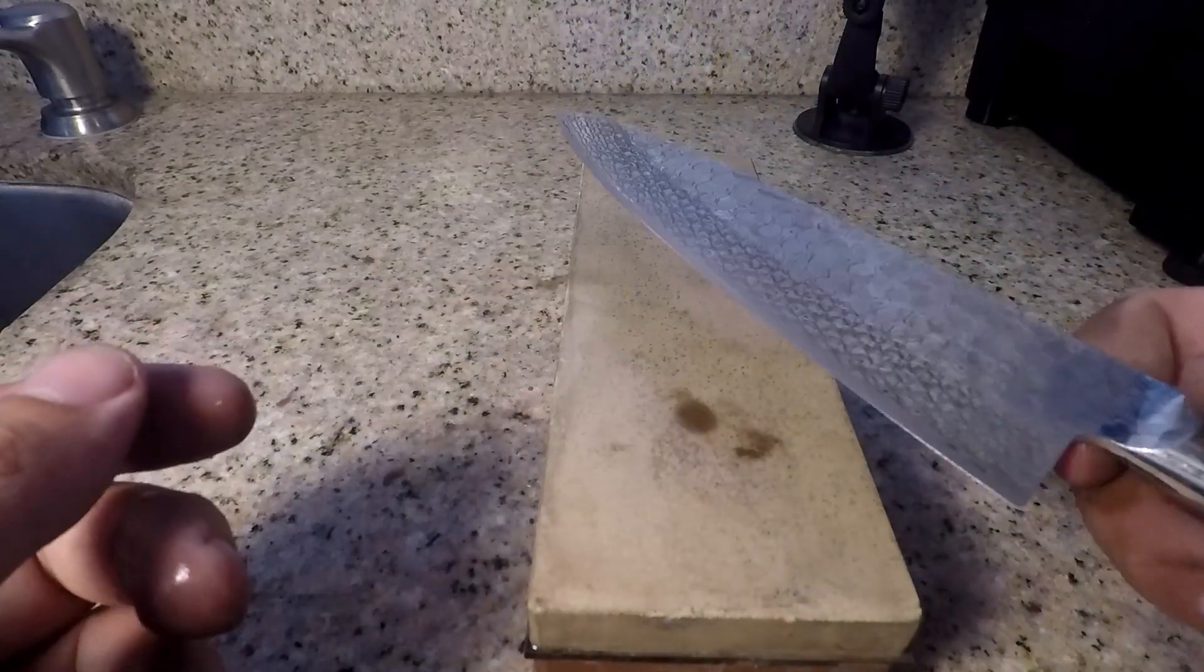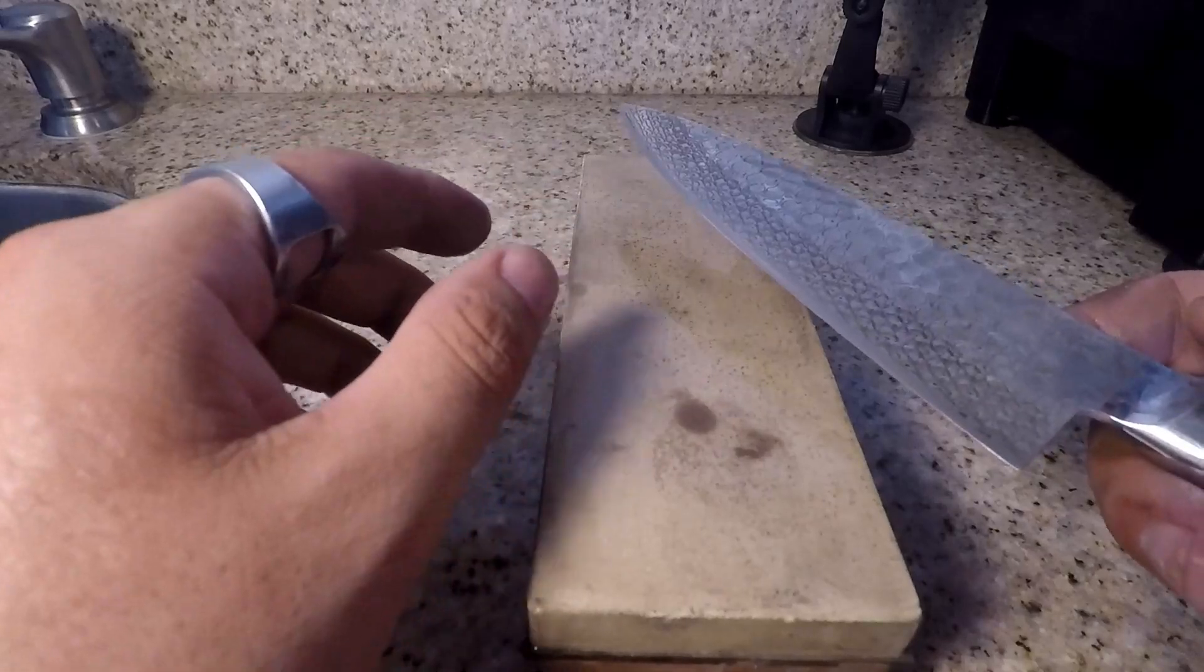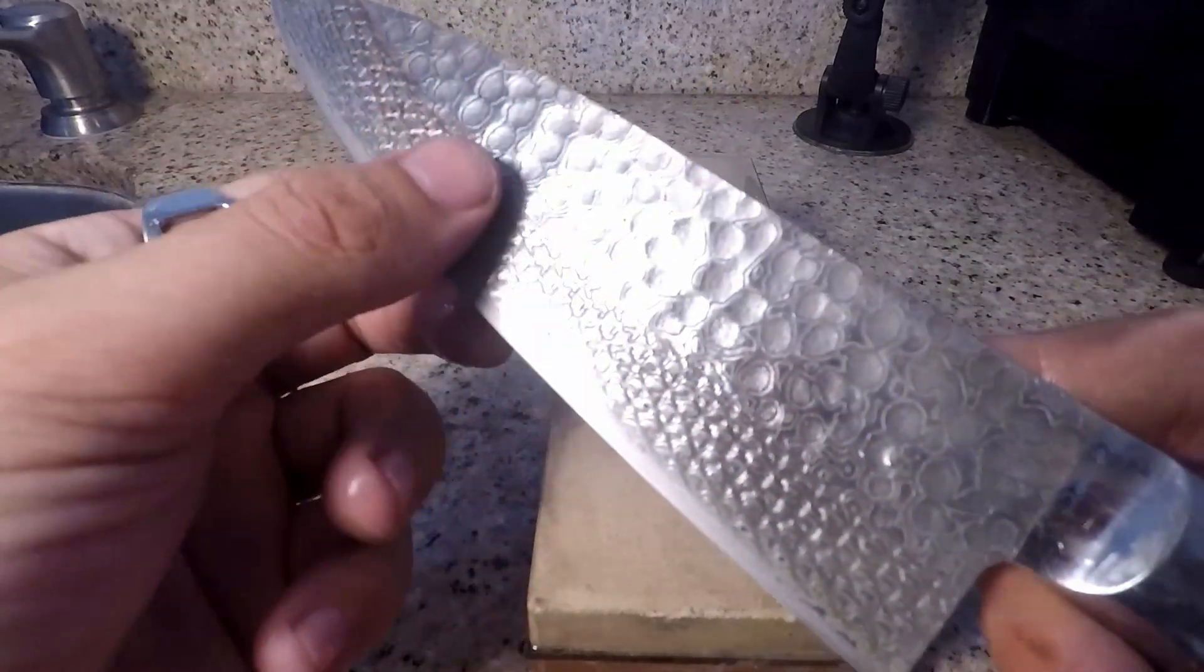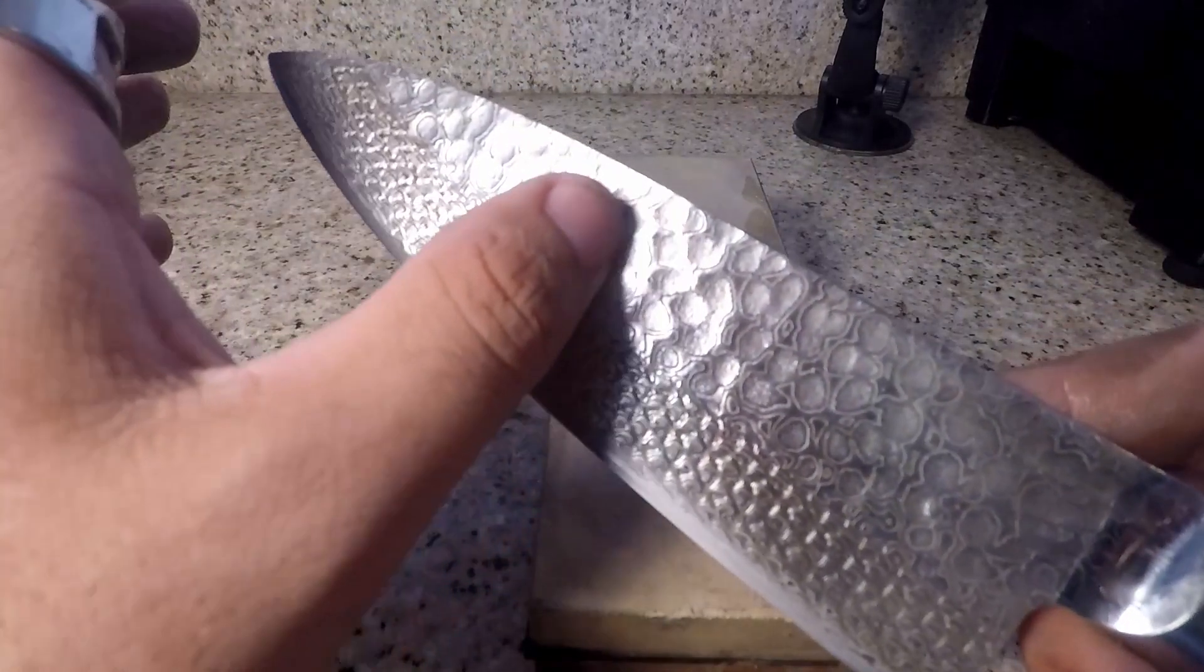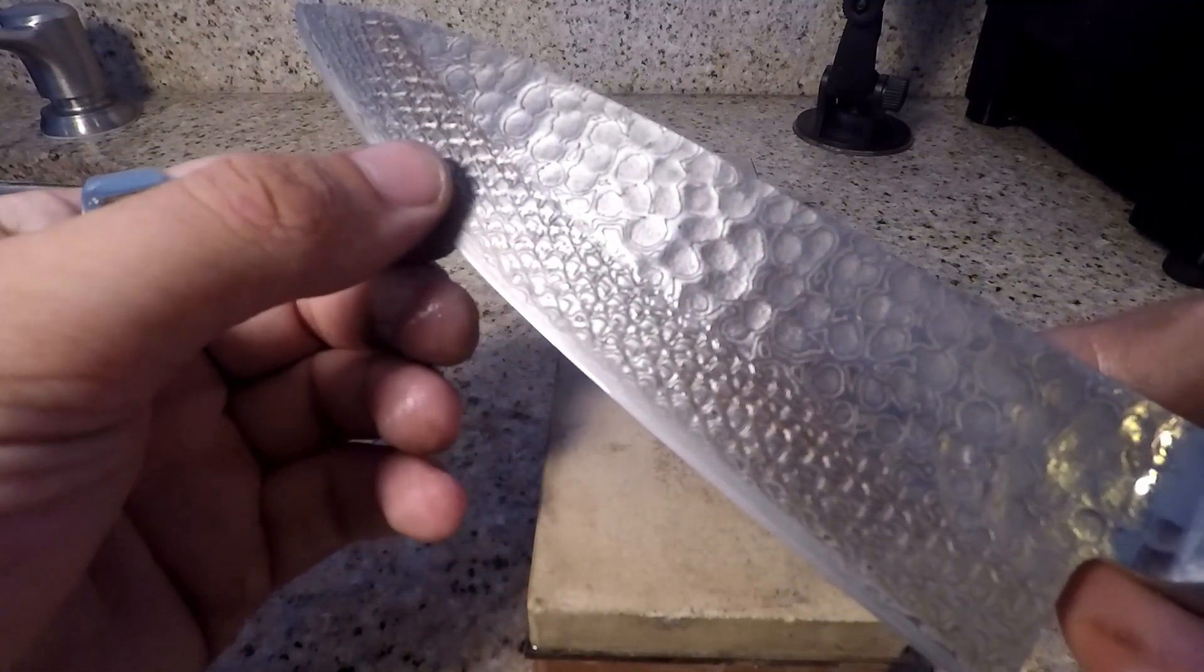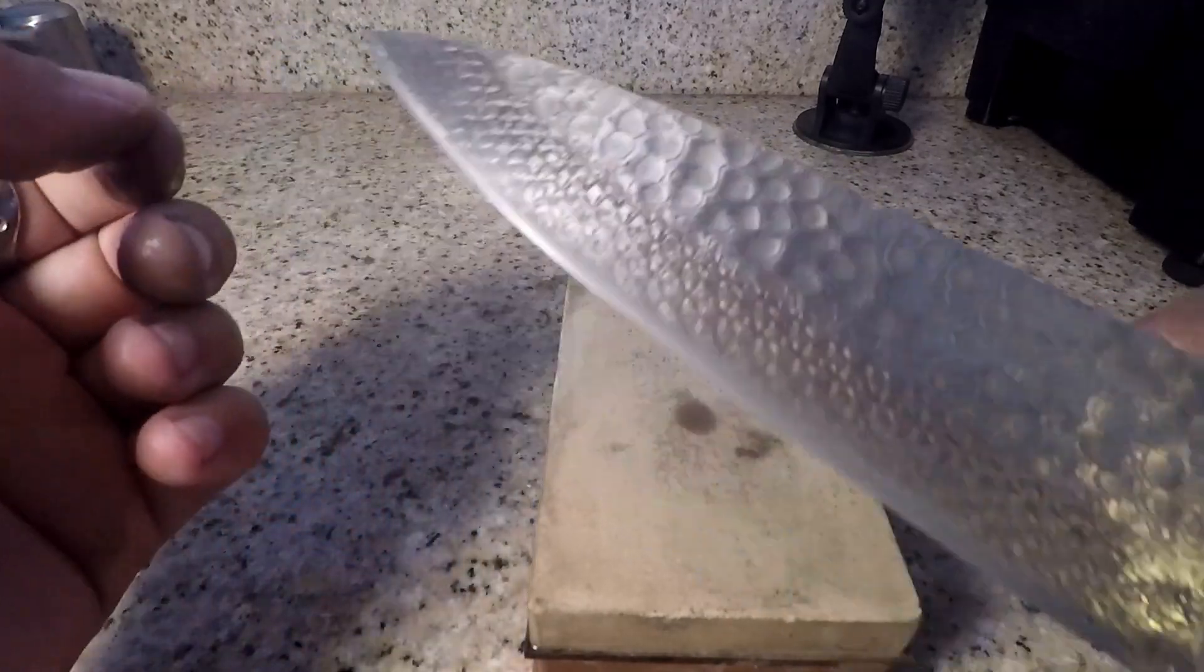So what we're gonna do now is we're gonna go ahead and move on to the 6000 grit whetstone. And this is actually where you achieve the polished look. So whenever we get finished here the edge here should actually be just as mirrored as the top of the blade is if not even shinier. So you should be able to actually catch a mirrored reflection in this whenever we're finished if you do a great job.